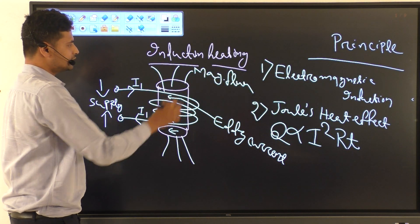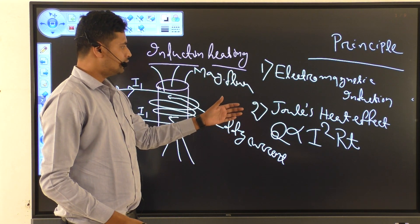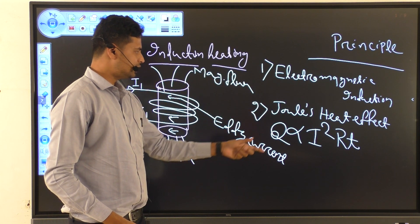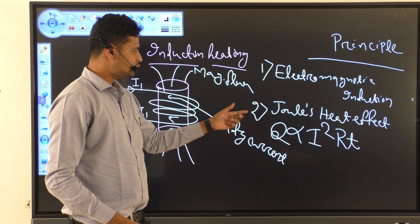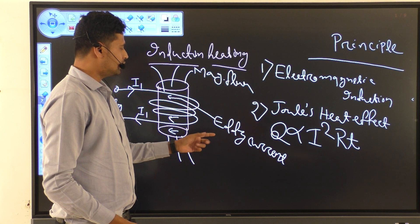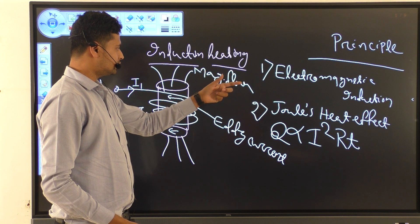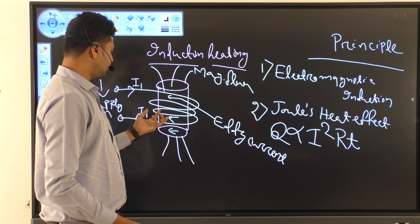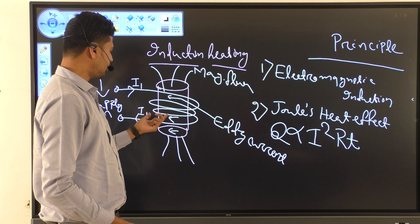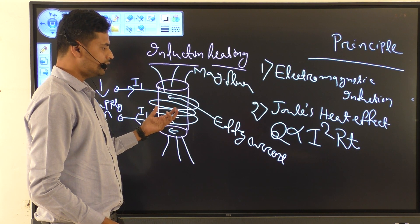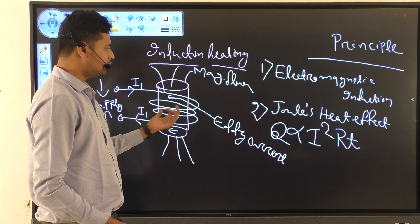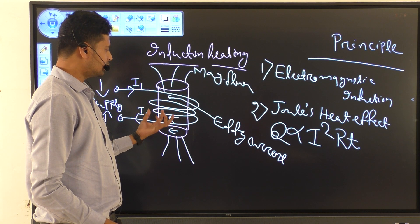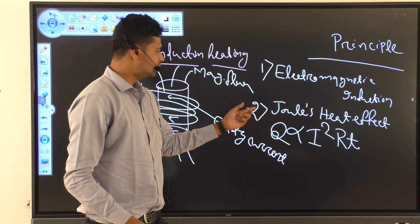Induction heating operates on two principles. The first is electromagnetic induction: when induced current is produced in a coil, magnetic flux is created, and this magnetic flux induces a secondary voltage that leads to eddy current. This eddy current is the main reason for the heating of the element. The second principle is the Joule's effect.